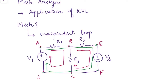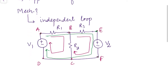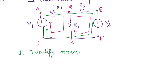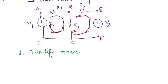The first step in mesh analysis is to identify the meshes in the circuit. In this circuit we have identified that there are two meshes: the first mesh and the second mesh.